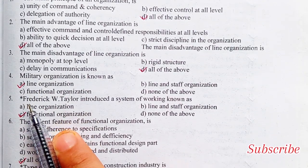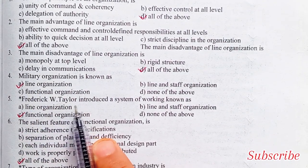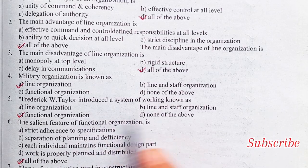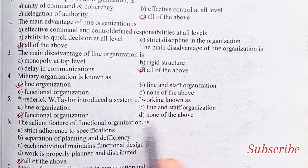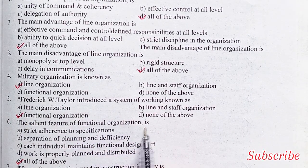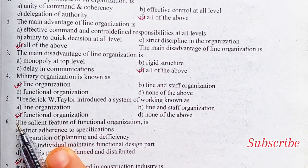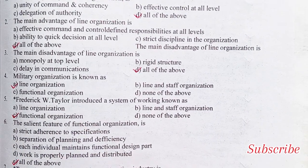Frederick W. Taylor introduced a system of working known as: line organization, line and staff organization, functional organization, or none of the above. The answer is C — functional organization.